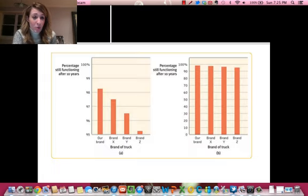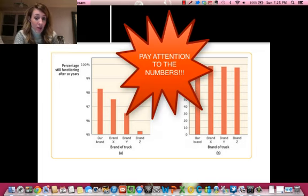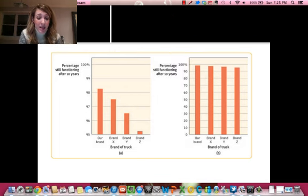Here's something really important to remember when you're looking at graphs. Please make sure that you actually pay attention to the way they have the numbers distributed. These two graphs look very different, except they're the exact same data. And if you look at graph A, it really looks like their brand is awesome. Like, look how much higher the bar chart is. But that's because they have 95, 96, 97, 98, 99 all spread out.